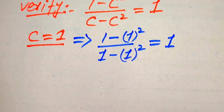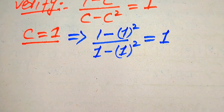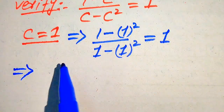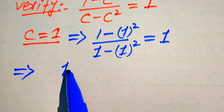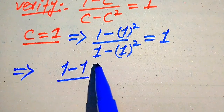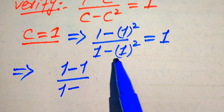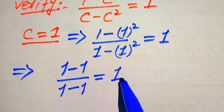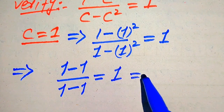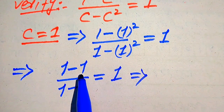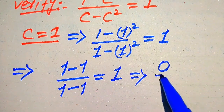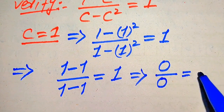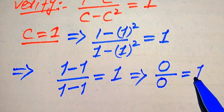We make simplifications on the left hand side. We get 1 minus 1 divided by 1 minus 1, which equals 1. This implies that 1 minus 1 becomes 0 divided by 1 minus 1 becomes 0, and this is equals to 1.